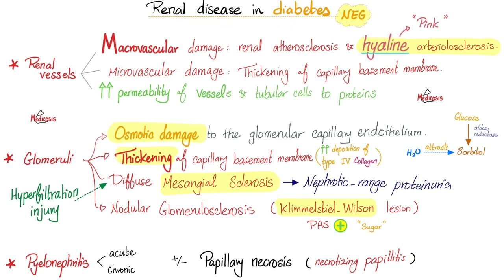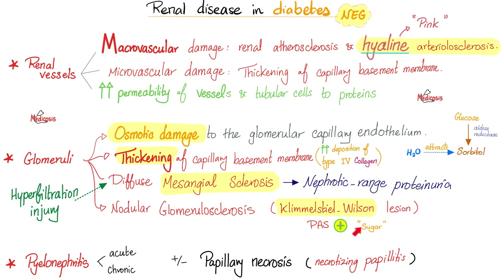Renal disease and diabetes. Diabetes damages your renal vessels, your glomeruli, and your renal pelvis vessels — both big and small vessels — causing renal atherosclerosis and hyaline arteriolosclerosis. Hyaline means pink because of proteins, similar to hyaline membrane disease in the lungs. There is osmotic damage to the glomerular capillary endothelium because glucose gets converted to sorbitol by the aldose reductase enzyme. Sorbitol is osmotically active and attracts water, causing osmotic damage to your kidney. Diabetes also increases deposition of type 4 collagen in the basement membrane, making it thick. Diffuse mesangial sclerosis from hyperfiltration injury causes nephrotic range proteinuria — more than 4 grams per day. You can even get nodular glomerulosclerosis, the Kimmelstiel-Wilson lesion, which is PAS positive because PAS stains sugar and diabetes is so sweet.